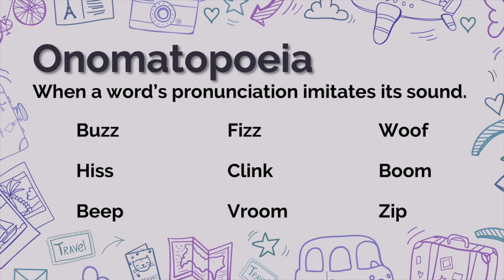So, let's analyze onomatopoeia. When a word's pronunciation imitates a sound, like buzz, hiss, beep, fizz, click, vroom, woof, boom, and zip. Let's take a look at some examples.